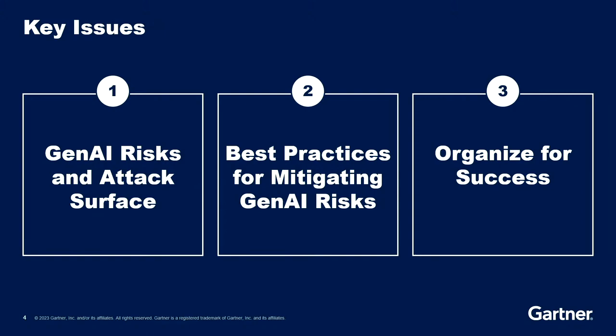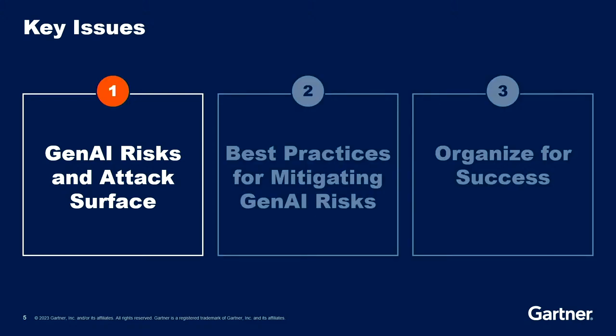Let's talk about this by breaking down three key areas. First, we'll look at the risks — what are they, and what is this attack surface? We've been attacked for years, but what's new? Second is best practices for mitigating the risks. And then the third section is really the most important: what do you do about this? How do you organize? What steps do you take? So let's start with the risks and the attack surface.